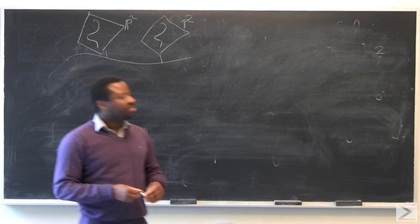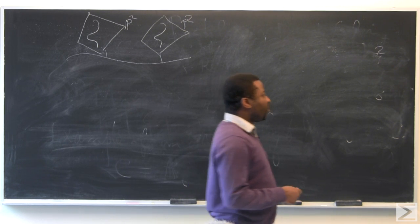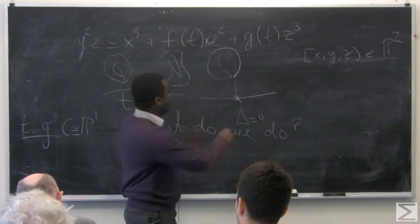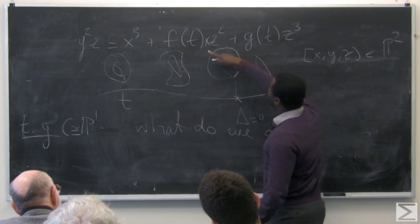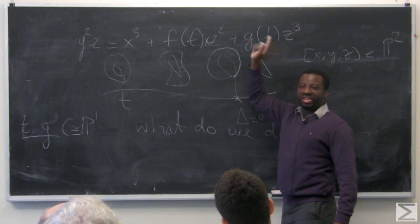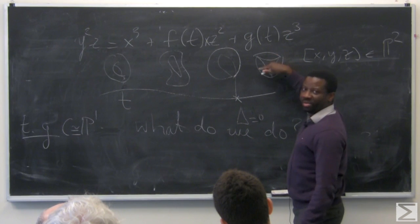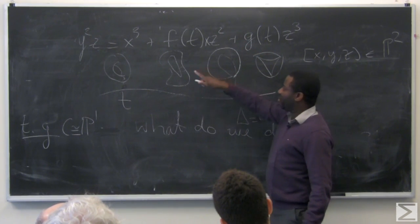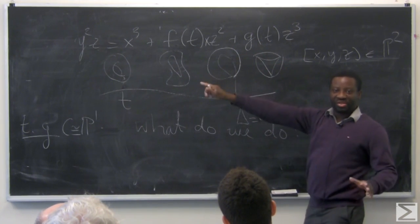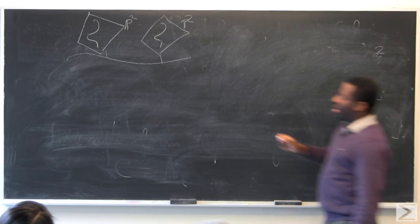A question arises: can you have fibers where more than one curve collapses at the same time? Yes, you can have singularities that, after resolution, will give you more complicated fibers. The Weierstrass model really only has nodal and cusp singular fibers. But after resolution of singularity — which is actually what we want to talk about today — you can have more sophisticated objects.